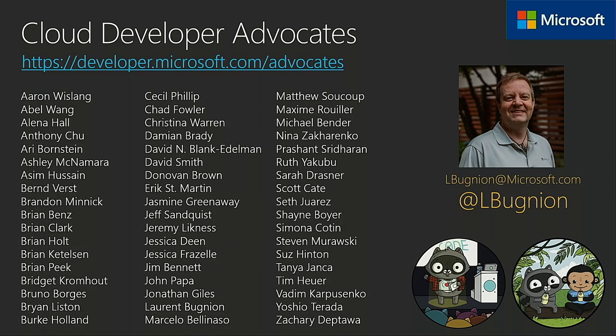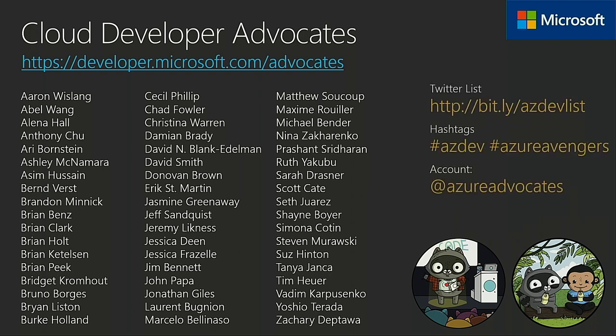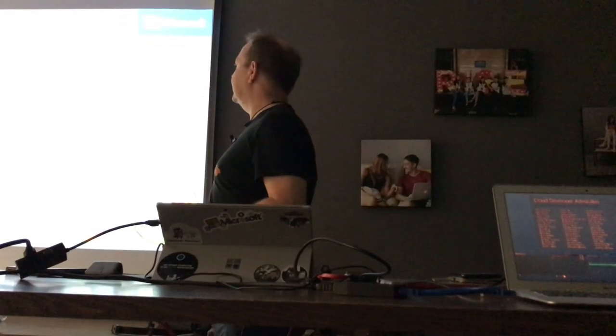This slide is actually old because our team has grown so much that I don't have enough space now to put everyone. But what's really important here is that you can actually follow us on Twitter. We have a list which is pretty up-to-date with all the Cloud Developer Advocates - or Cloud Advocates, because now we also have operations people. So we have Cloud Operation Advocates and everybody can be followed here, along with the hashtags and Twitter account.